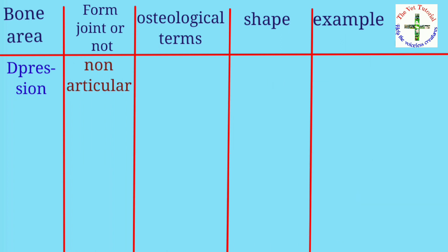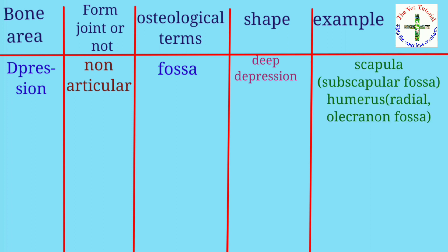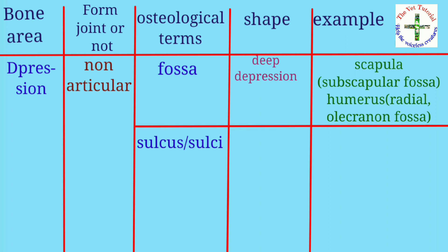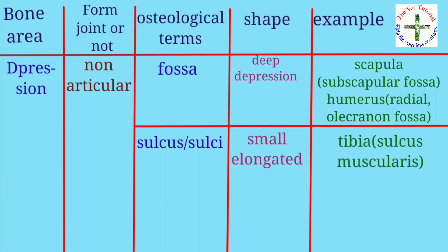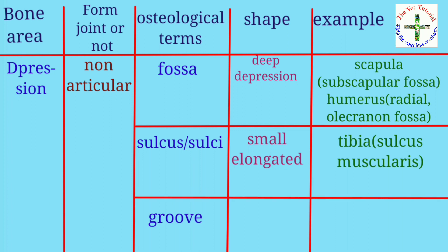Under non-articular depressions: fossa — shape is deep depression, example scapula with subscapular fossa, and humerus with radial and olecranon fossa. Then sulcus — shape is small elongated, example tibia with sulcus muscularis. And lastly grooves — shape is elongated area, example radius.